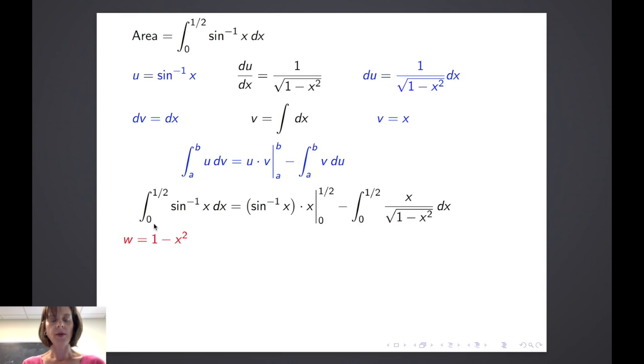So again, letting w equal 1 minus x squared, dw dx is negative 2x. So 1 half dw is equal to a negative x dx. So making the substitution, I get that the integral on the left hand side is equal to x times the inverse sine of x evaluated from 0 to 1 half plus 1 half times the integral from 1 to 3 fourths of 1 over w to the 1 half power dw.